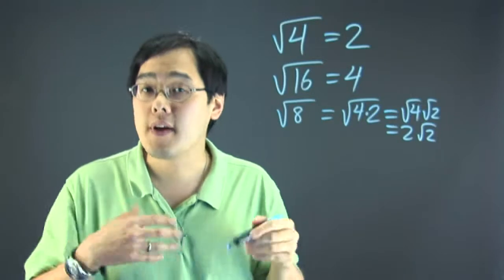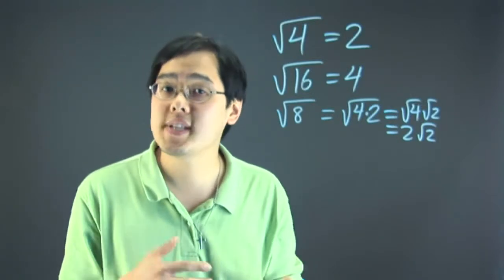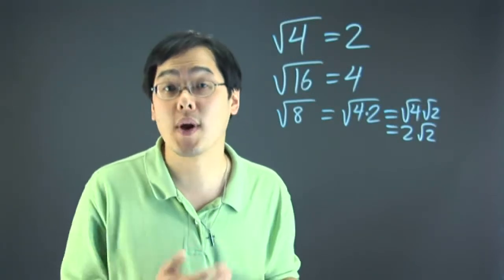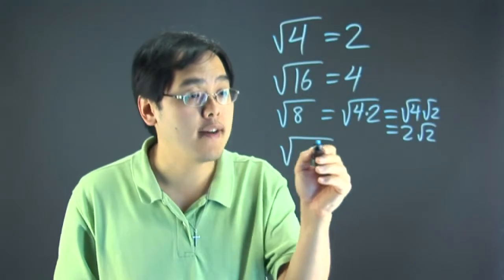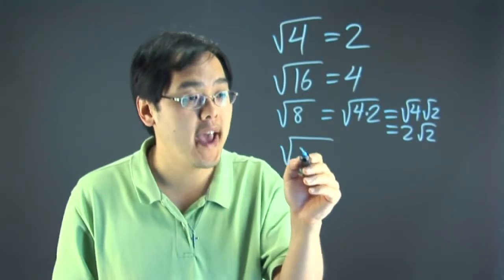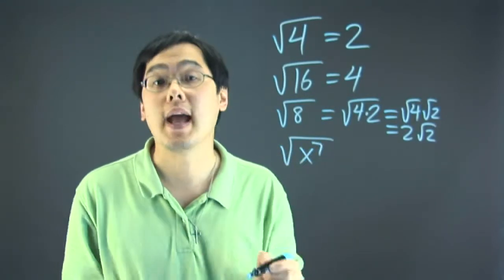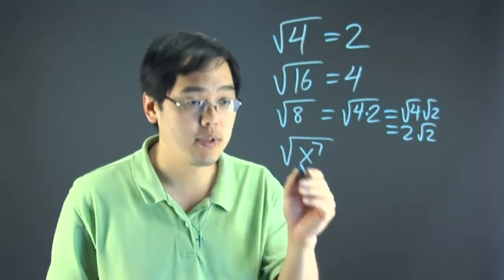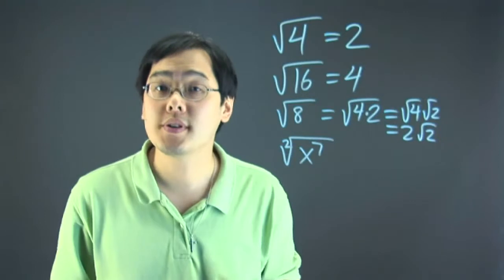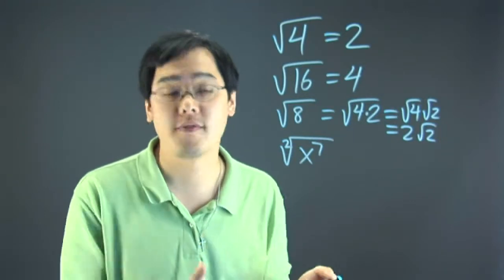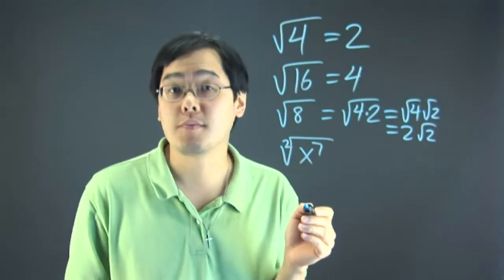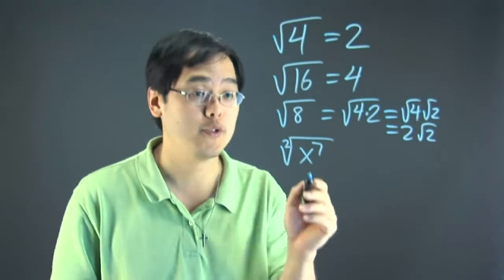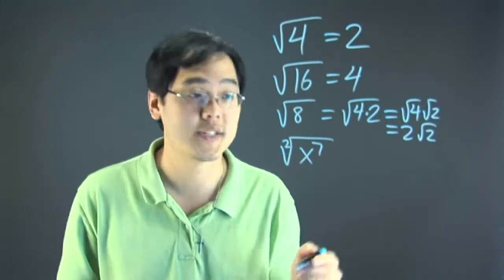If you have variables, however, it's a little bit different, but it's actually in some ways easier than regular numbers. Let's say you want to simplify the square root of x to the 7th. Even though the square root, the 2, is not really written because it's implied, you can put the 2 here to show you how to simplify. It's actually a long division problem, a very easy division problem, to figure out what the square root of x to the 7th is.